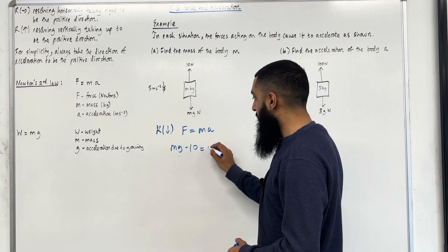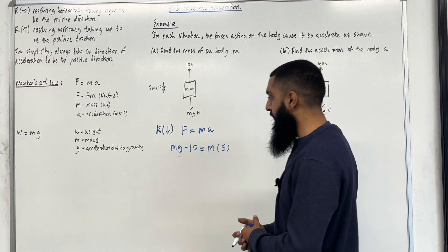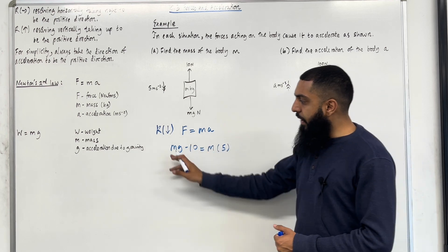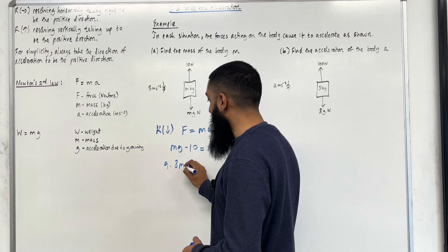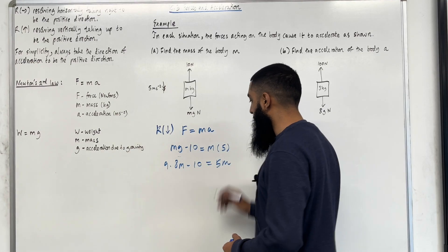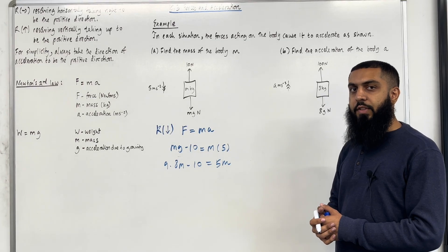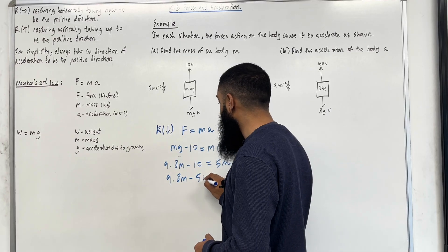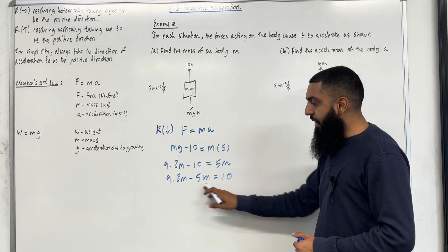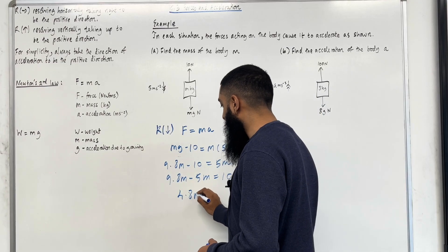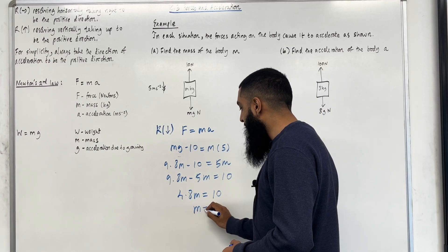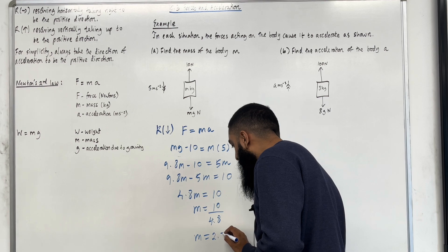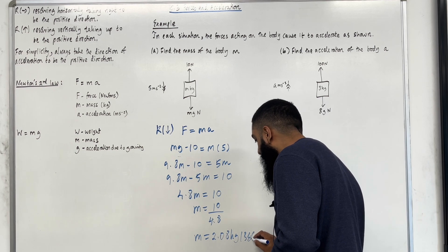This must equal the mass M multiplied by the acceleration, 5. G is acceleration due to gravity, G = 9.8. So I can rewrite as 9.8M minus 10 = 5M. Rearranging: 9.8M minus 5M = 10, which simplifies to 4.8M = 10. Hence M = 10 divided by 4.8, giving M = 2.08 kg to three significant figures.